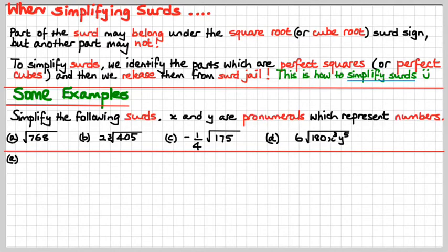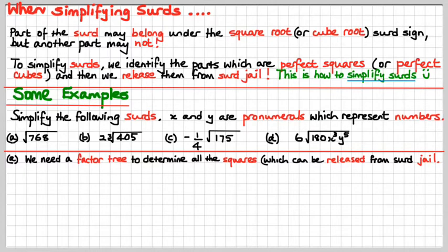Some examples for you — we're going to simplify these surds. X and Y are pronumerals, which represent just numbers. The first one off the rank: we've got the square root of 768. So what we need to do is a factor tree to determine all the squares, which can then be released from surd jail. Let's get stuck into 768.